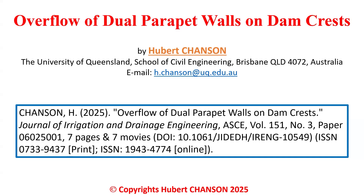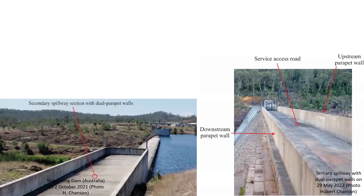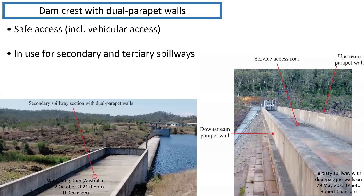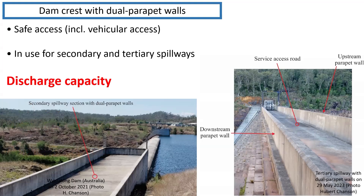The overflow of dual parapet walls on dam crest. This paper was published in the Journal of Irrigation and Drainage Engineering. Dual parapet walls may be installed on dam crest for safe access including vehicle access, and have been used in particular for secondary anti-scour spillways. The focus of this study is on the discharge capacity of such dam crests.